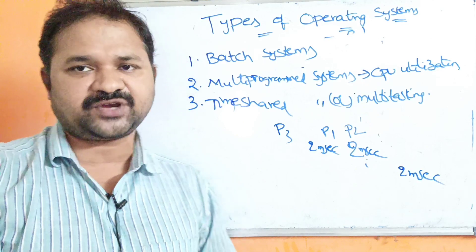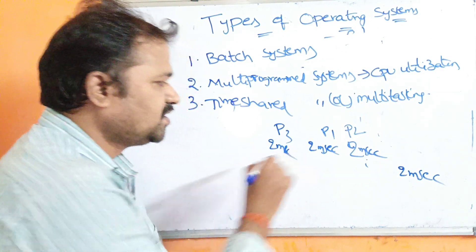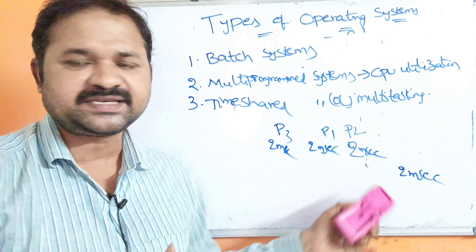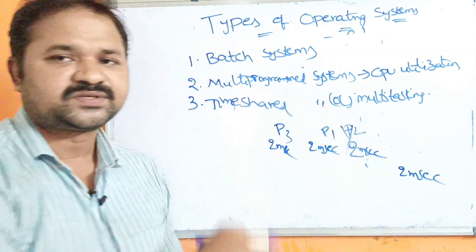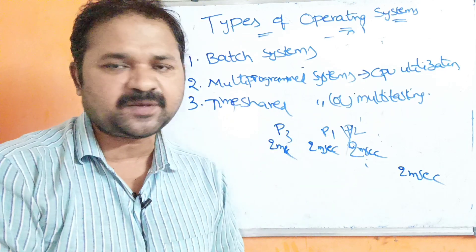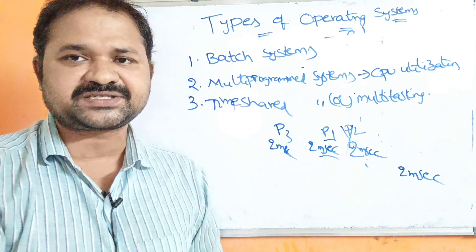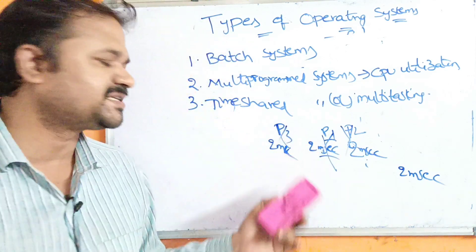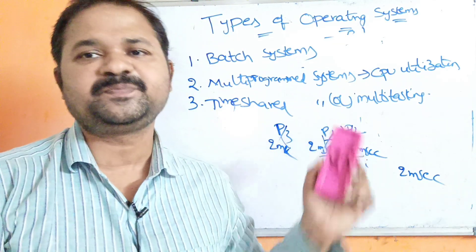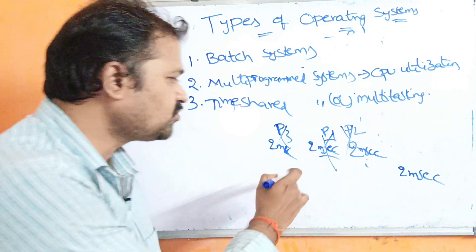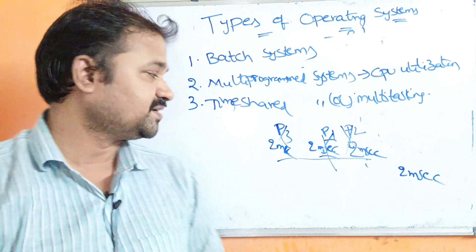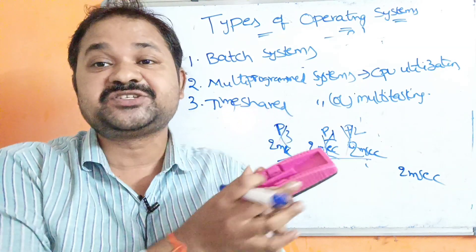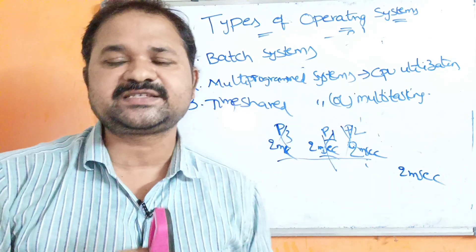The remaining 2 milliseconds of P3 goes to the end of the list. Now CPU executes P2, which requires only 2 milliseconds — it completes. Next, P1 also requires 2 milliseconds — it completes. Finally, CPU completes the remaining 2 milliseconds of P3. All processes have completed their execution. A time quantum is shared among all the processes in the system.